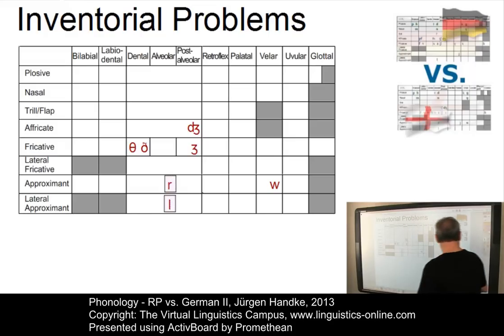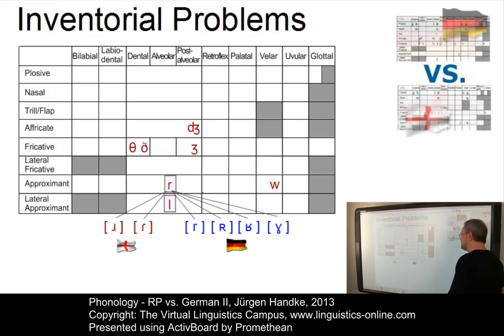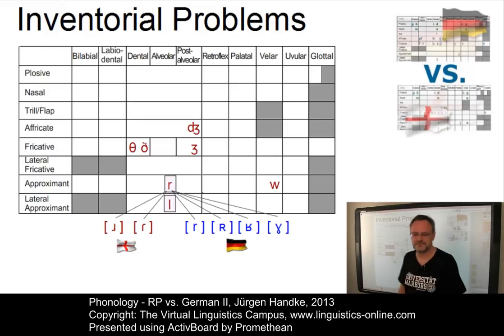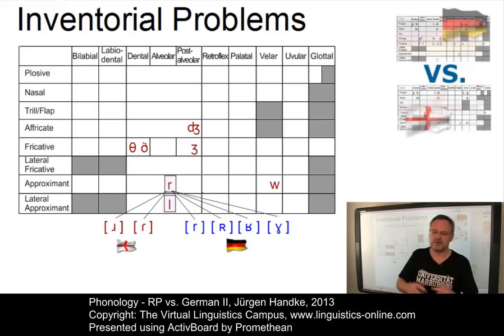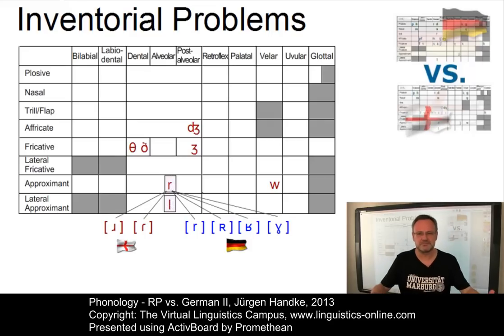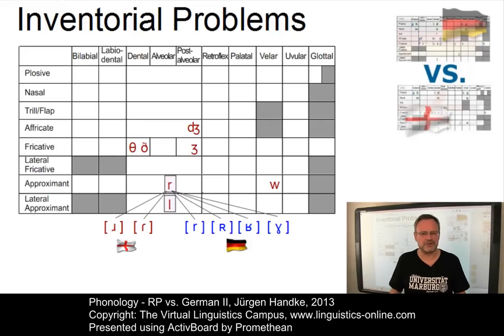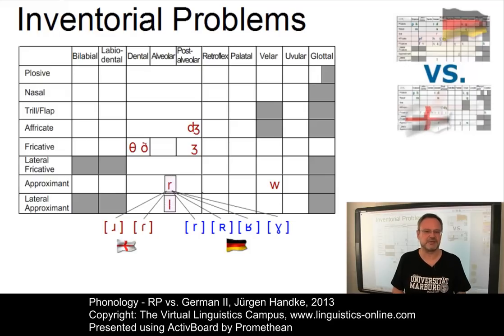And then there is the case of the R, where we have an approximant or flap in RP but a trill or fricative in German — and here only articulatory advice can help.